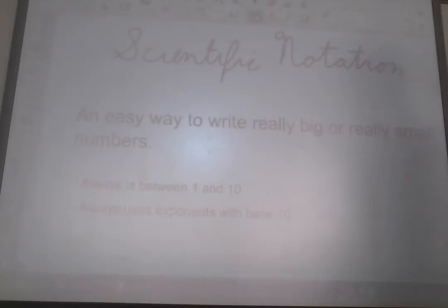Now, there's two pieces to scientific notation, to writing a number in scientific notation. There's a first number, and then there's a second number. The first number is always between 1 and 10. The second number always uses exponents with base 10. That probably doesn't mean much to you right now, but let me show you what I mean.